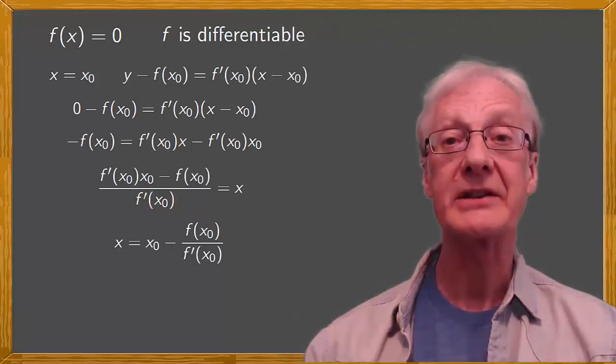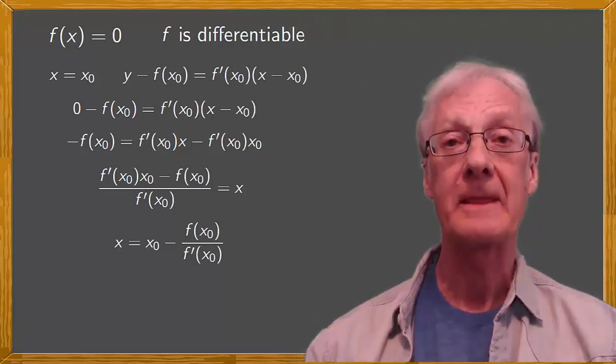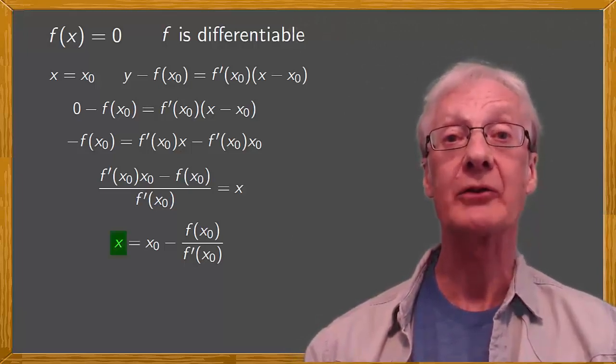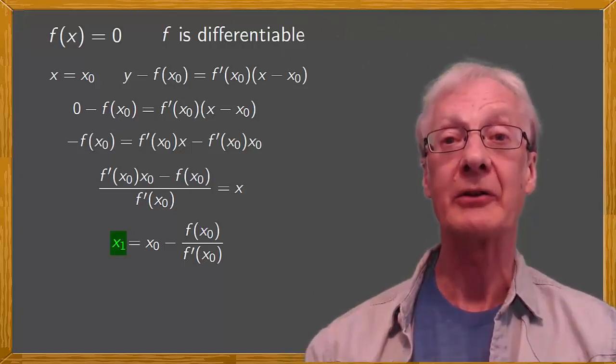Remember, we're calculating the intercept point of the tangent line with the x-axis, namely x1. So we replace x with x1 to give x1 equals x0 minus f of x0 over f prime of x0.